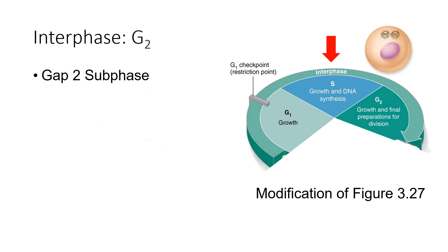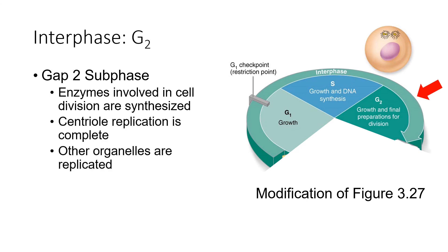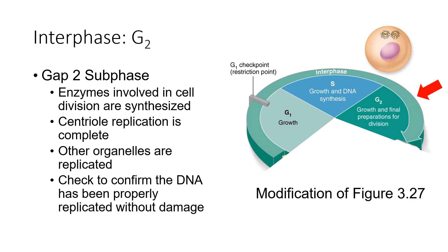After successful synthesis of new genetic material, the cell leaves the synthetic phase and moves into the GAP2 subphase. Here the cell makes final preparations for cell division. Enzymes that will be involved in cell division are synthesized and directed to the appropriate parts of the cell. Centriole replication is completed, as well as the replication of other organelles such as the mitochondria. Lastly, there's a check to confirm that the replicated DNA is undamaged. The cell is now ready to divide and move from interphase to the M, or mitotic, phase.